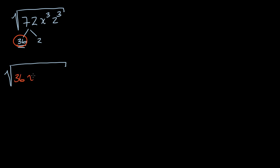And then what we're left with: we took a 36 out, so we're left with a 2. If we took an x squared out, we're left with just an x — x to the third divided by x squared is x. And z to the third divided by z squared is just z. So under the radical we have 36 x squared z squared times 2xz. You can verify this: 36 times 2 is 72, x squared times x is x to the third, z squared times z is z to the third.